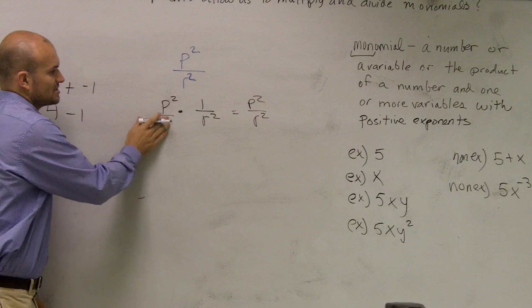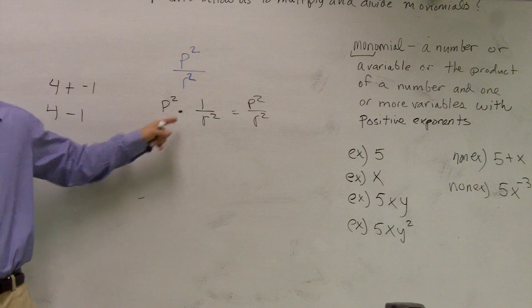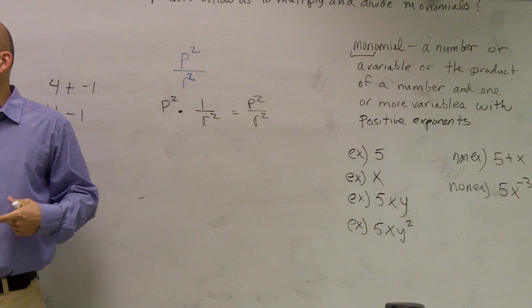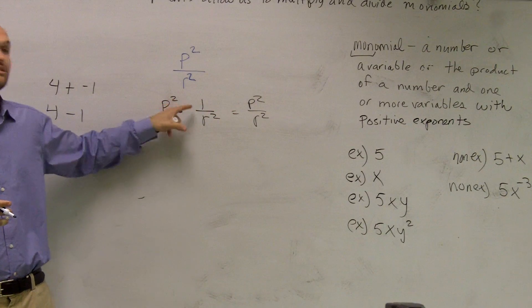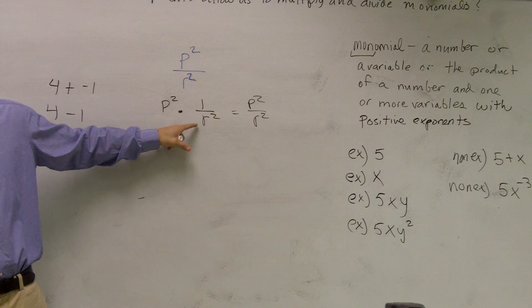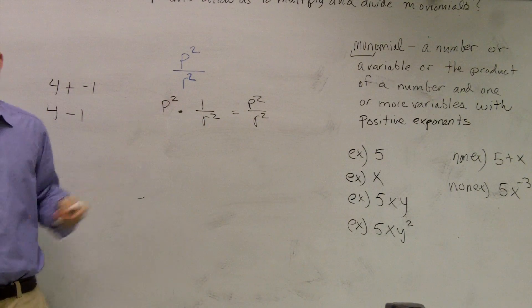So what I want you guys to understand is, I can rewrite this as a multiplication problem. So it got tricky because we tried to hide it as a division problem. But you need to know we can rewrite division as a multiplication problem. So therefore, this is a monomial.